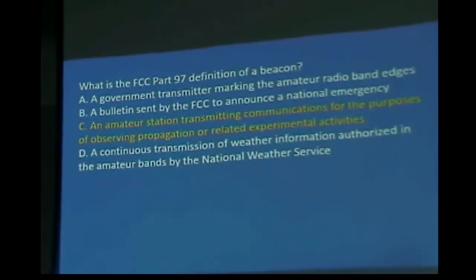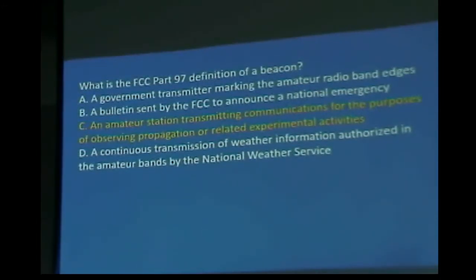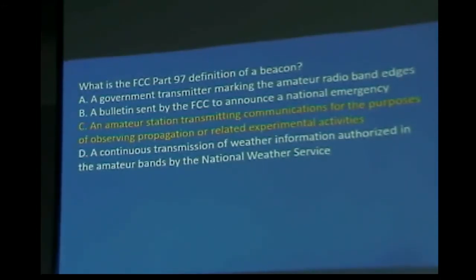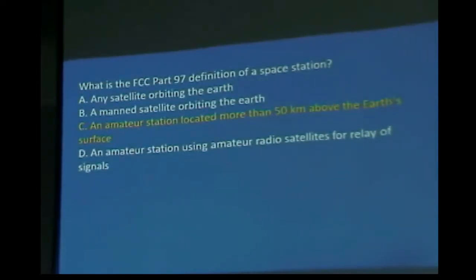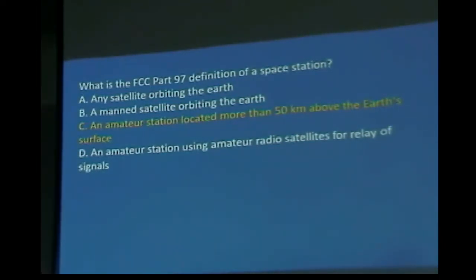The first Sputnik was essentially a beacon. It went around the earth with a radio transmitter that went on and off — beep beep beep — no intelligence, just 'I'm here.' That scared everyone. What is the FCC Part 97 definition of a space station? An amateur station located more than 50 km above the Earth's surface.